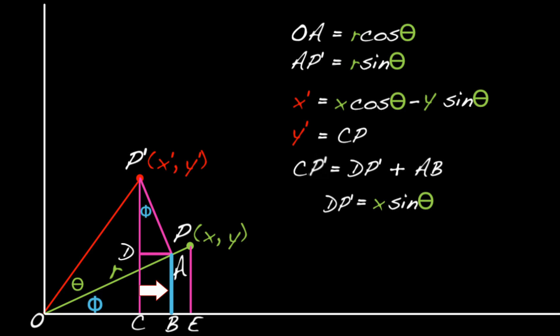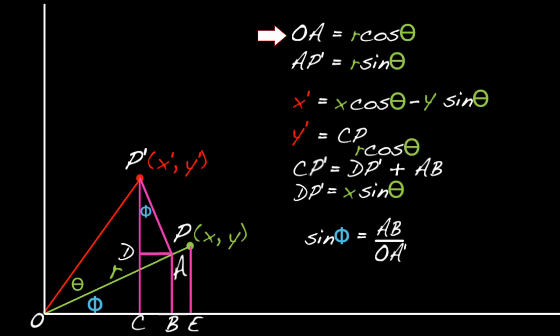AB is opposite phi. So, sine phi equals AB divided by OA. But OA is R cosine theta. So, sine phi equals AB over R cosine theta. And that means AB equals R sine phi times cosine theta. But R sine phi is just Y. So, AB equals Y cosine theta.